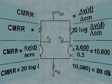Let's look at an example. A certain differential amplifier has a differential voltage gain of 3000 and a common mode gain of 0.3. Determine the CMRR and express it in dB. CMRR is equal to 3000 over 0.3, or 10,000. Expressed in dB, CMRR is equal to 20 log of 10,000, or 80 dB. A CMRR of 10,000 means that the differential input signal is amplified 10,000 times more than the unwanted noise, which is the common mode.